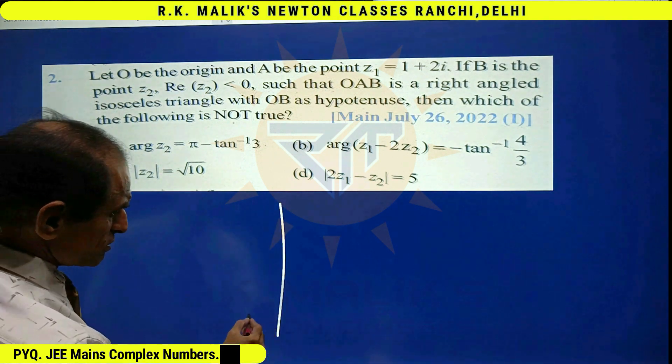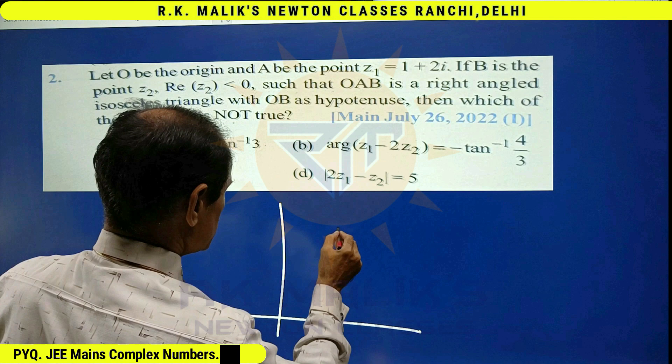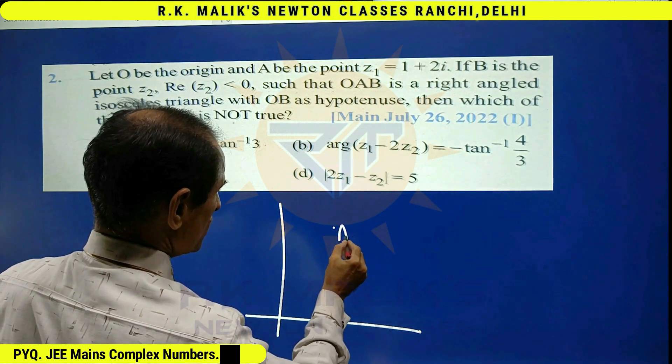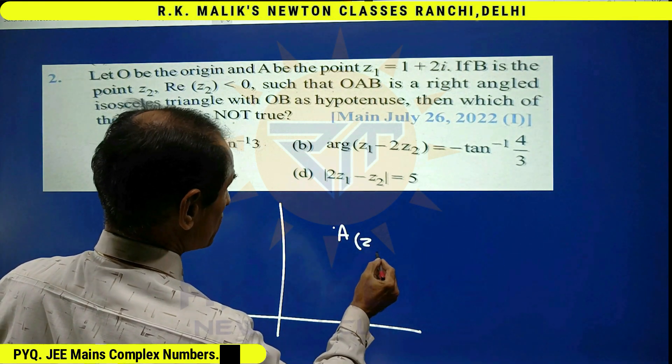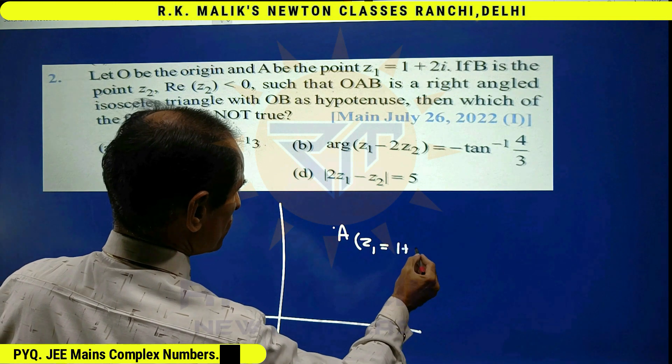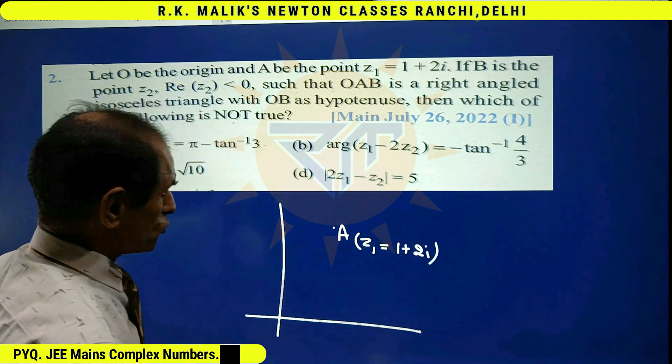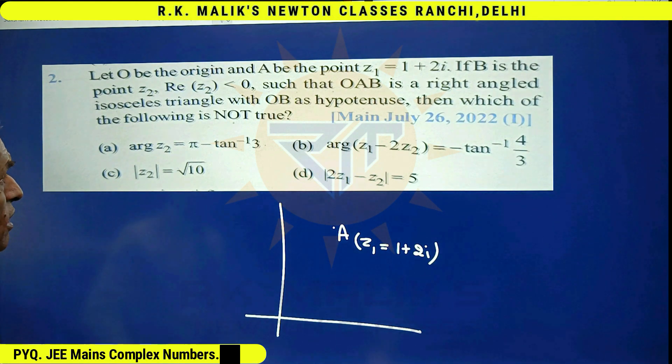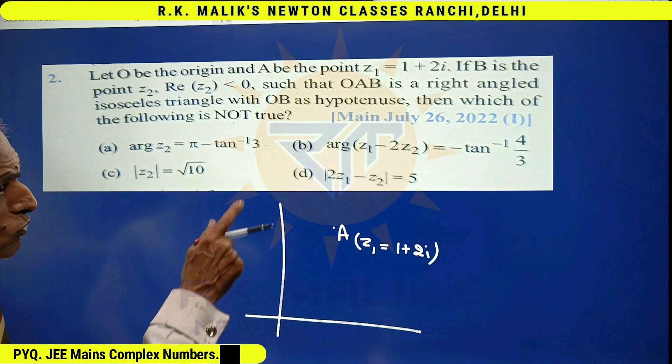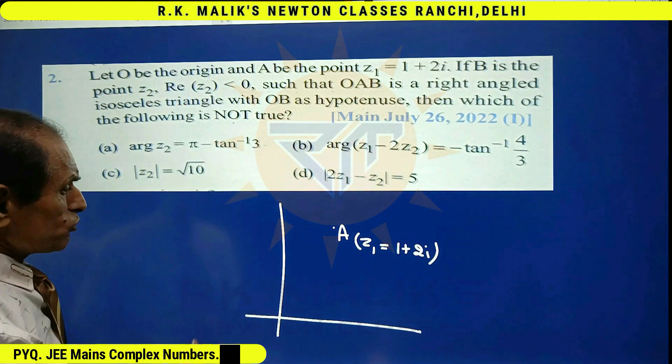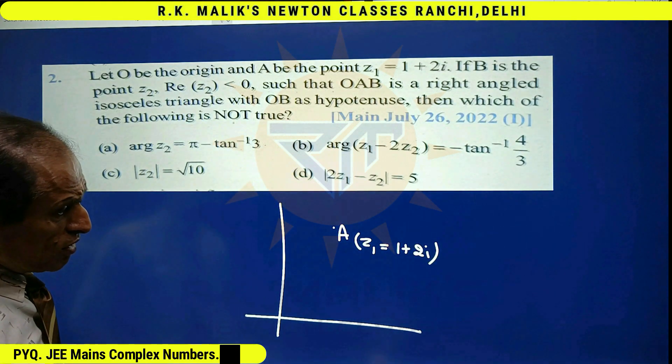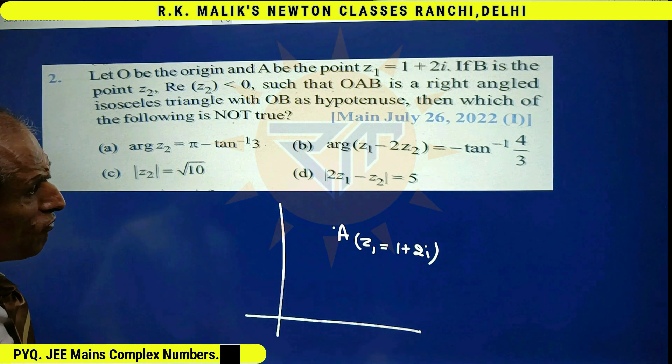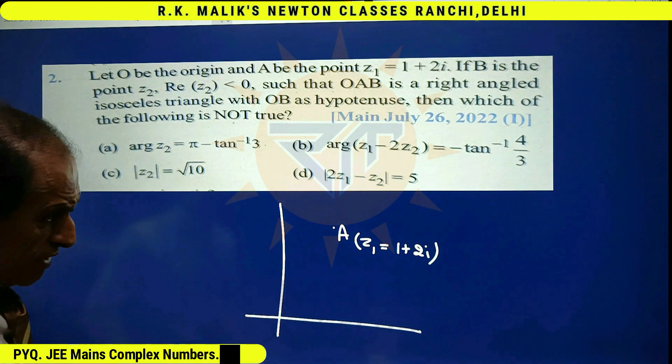According to the question, the figure formed has point A with affix z1 equal to 1 plus 2i, and OAB is a right-angled isosceles triangle with OB as hypotenuse. Real part of z2 is less than 0 because OB is hypotenuse, which means the right angle must be at A.